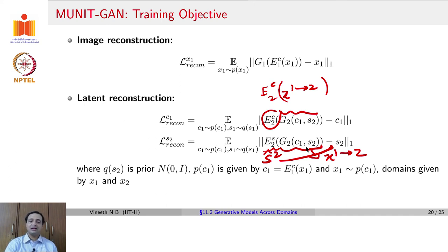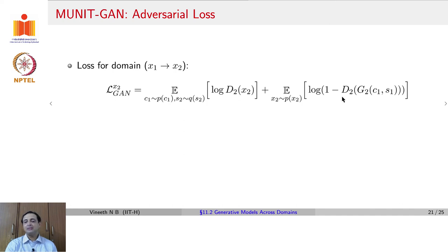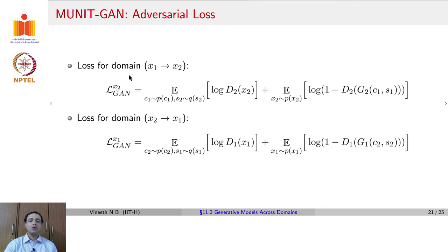One would similarly have reconstruction loss terms for S1 and C2. A final adversarial loss ensures that D2(X2) is maximized by discriminator D2, and 1 - D2(G2(C1, S1)) is maximized by the discriminator and minimized by the generator. This is the standard GAN loss for the second domain. One would similarly define a GAN loss for the first domain as the complement of the same loss function.